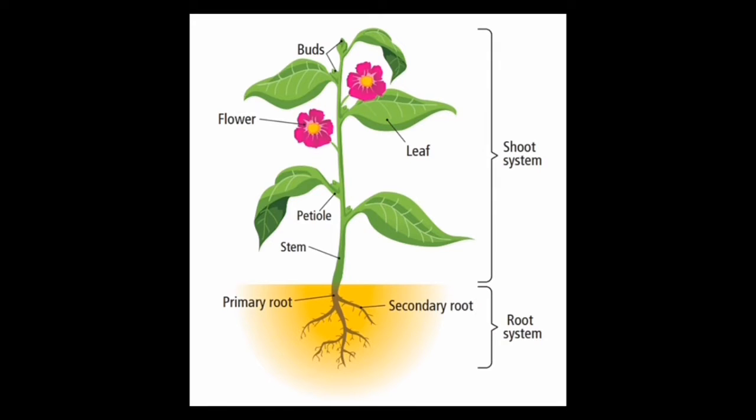Like us, plants also have a perfect body with various parts meant for various functions. A plant body basically consists of a shoot system and root system. Today I am going to explain about the root system.